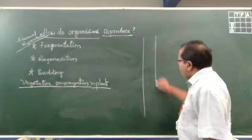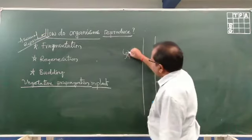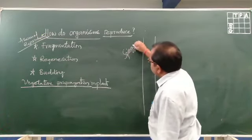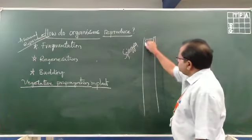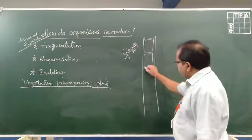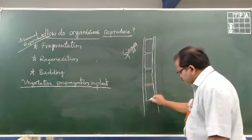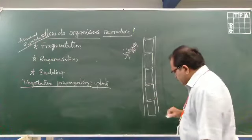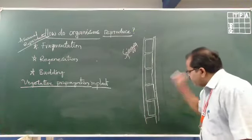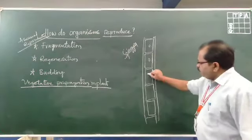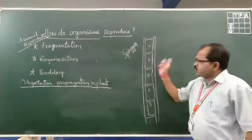Usually when you see an organism like spirogyra, this organism has many cells and the body is like a scale or a measuring tape, and each cell has an individual nucleus. It is a completely aquatic animal — this is the spirogyra.